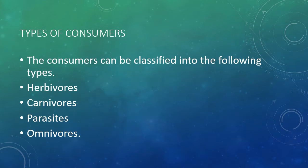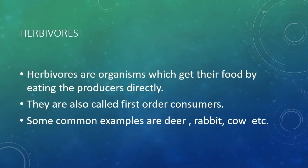Consumers can be classified into the following types: herbivores, carnivores, parasites, and omnivores. Herbivores are organisms which get their food by eating the producers directly. They are also called first-order consumers. Some common examples are deer, rabbit, cow, etc.